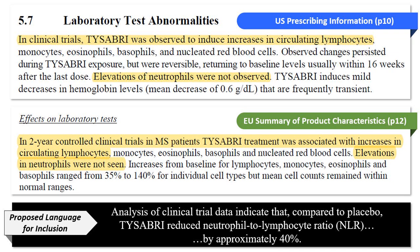The same thing applies to the EU Summary of Product Characteristics: 'In two-year controlled clinical trials in MS patients, Tysabri treatment was associated with increases in circulating lymphocytes,' and 'elevations in neutrophils were not seen.' Same essential language. And if you do the math, you see — and this is my proposed language — that analysis of clinical trial data indicates that, compared to placebo, Tysabri reduced Neutrophil to Lymphocyte Ratio. I think that's a defensible claim based on what's already in the prescribing information and Summary of Product Characteristics.